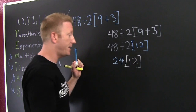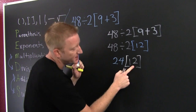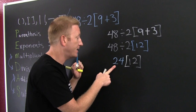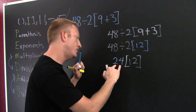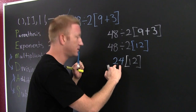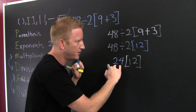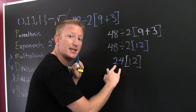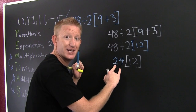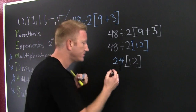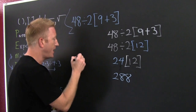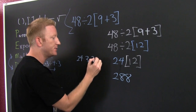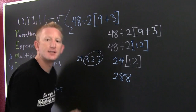Now I need to do 24 times 12. Big numbers — let's break it down. 24 times 3 is 72, then we double 72 to get 144, then double it again to get 288. What I did: I multiplied 24 by 3, then by 2, then by 2 again — because 12 equals 3 times 2 times 2.